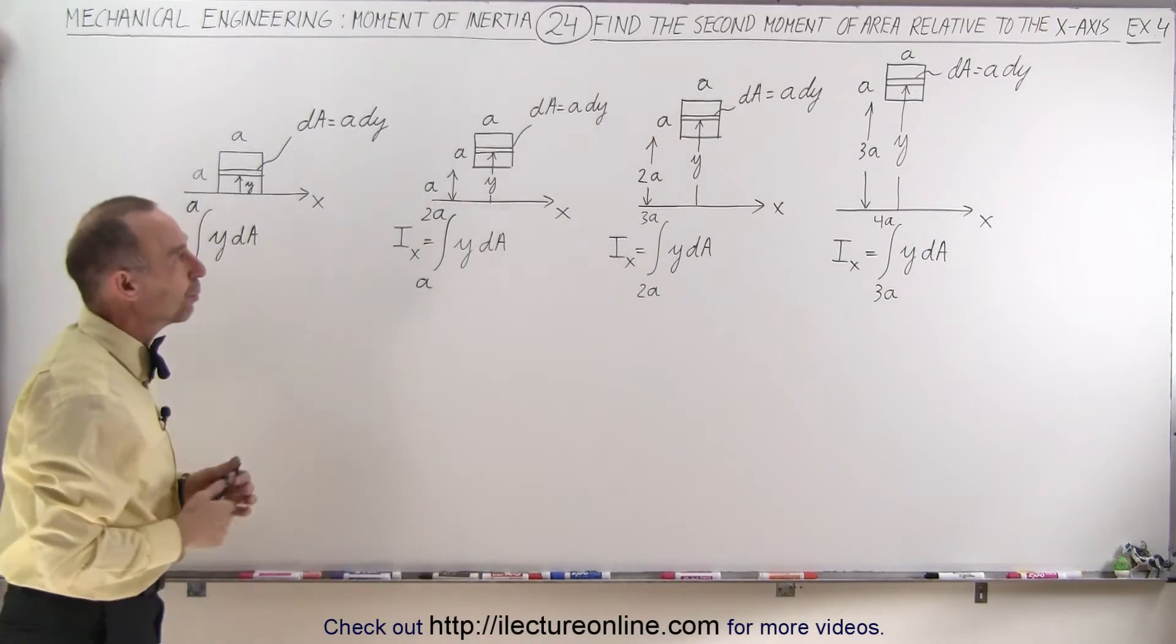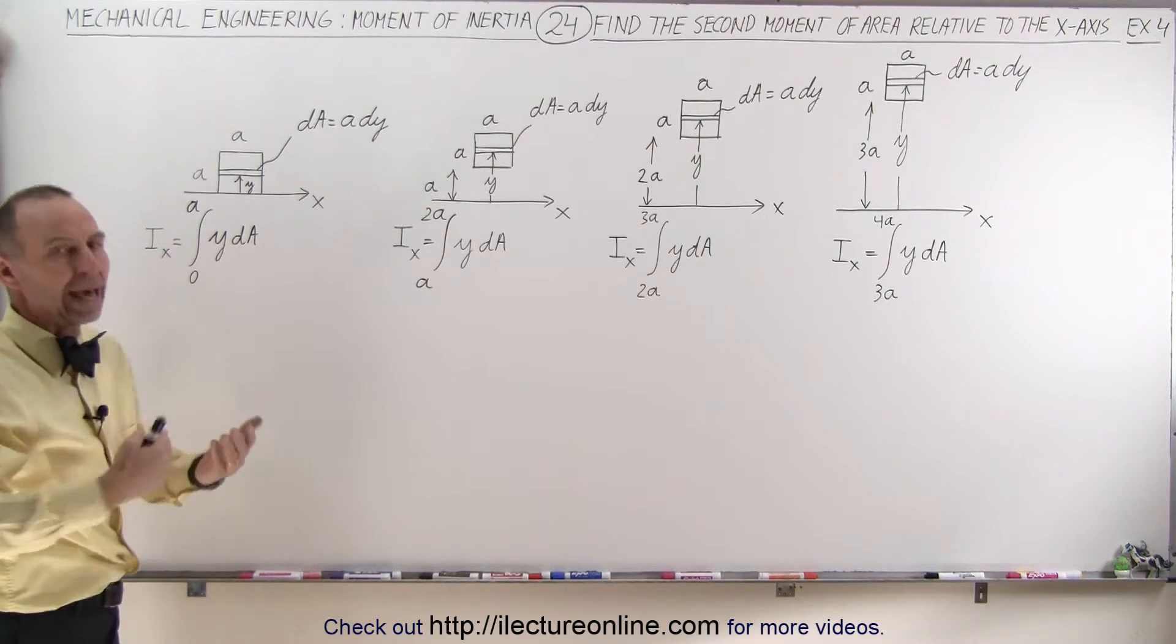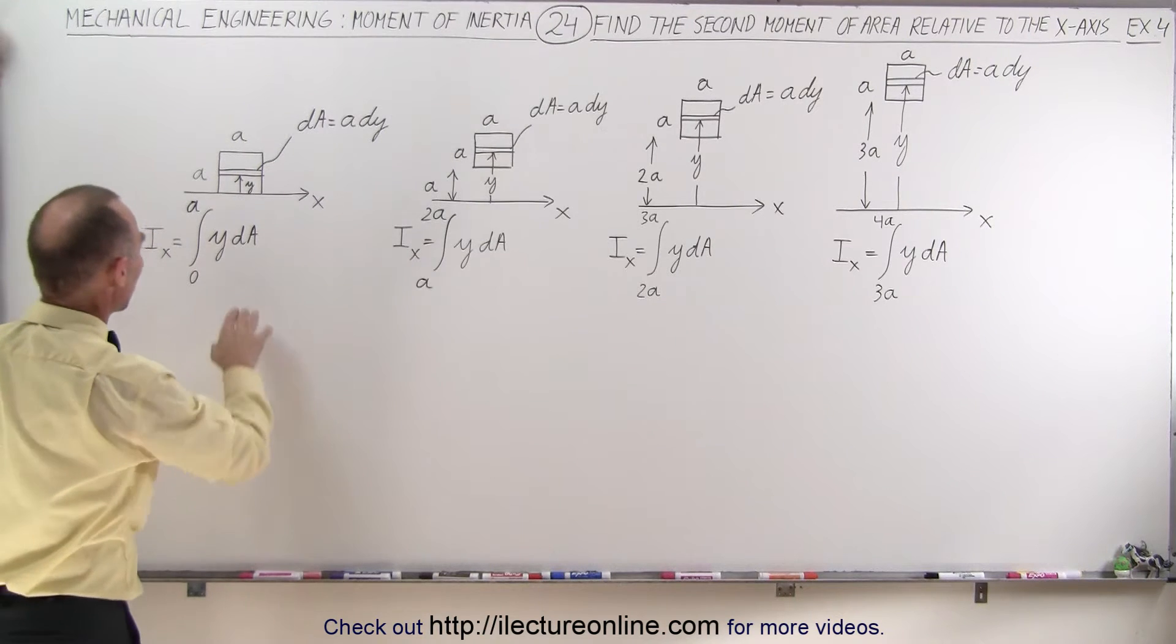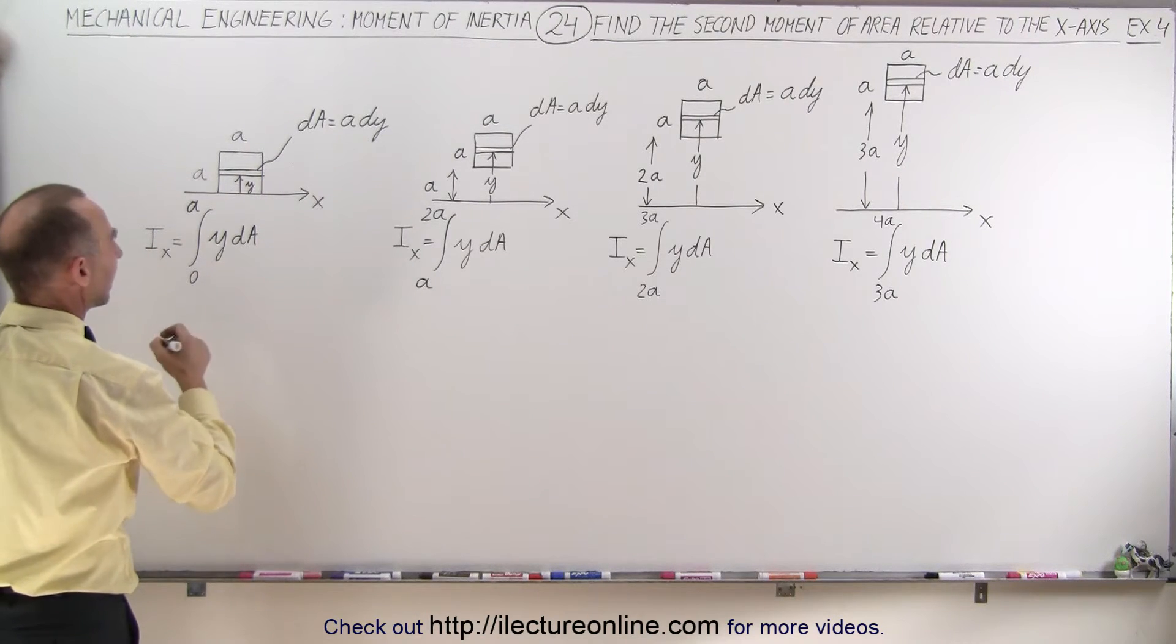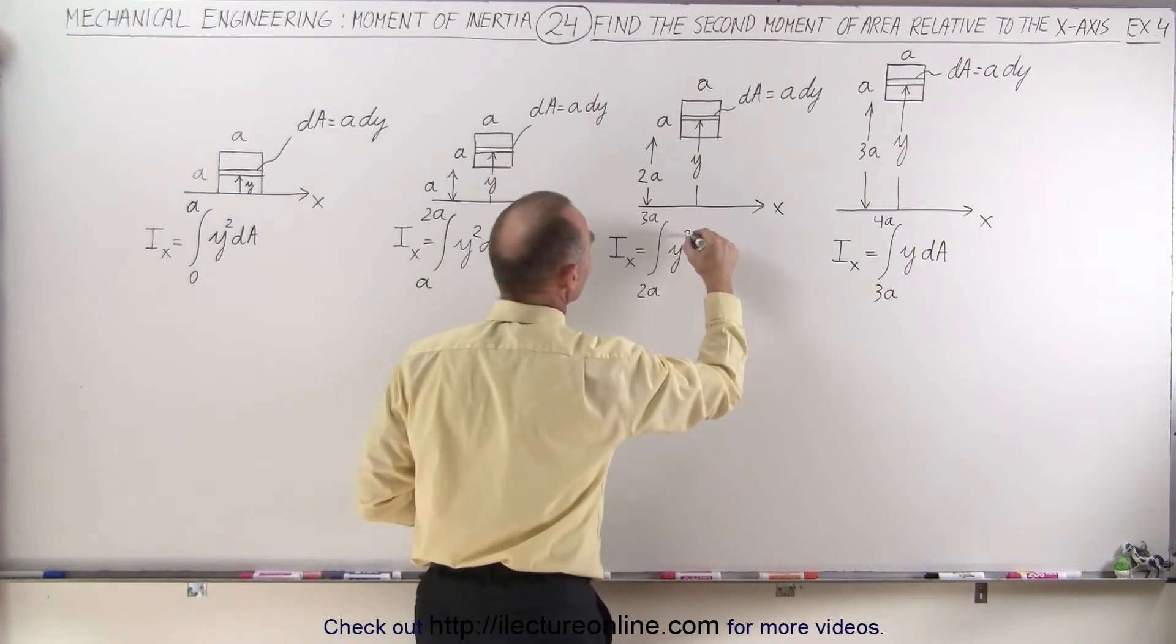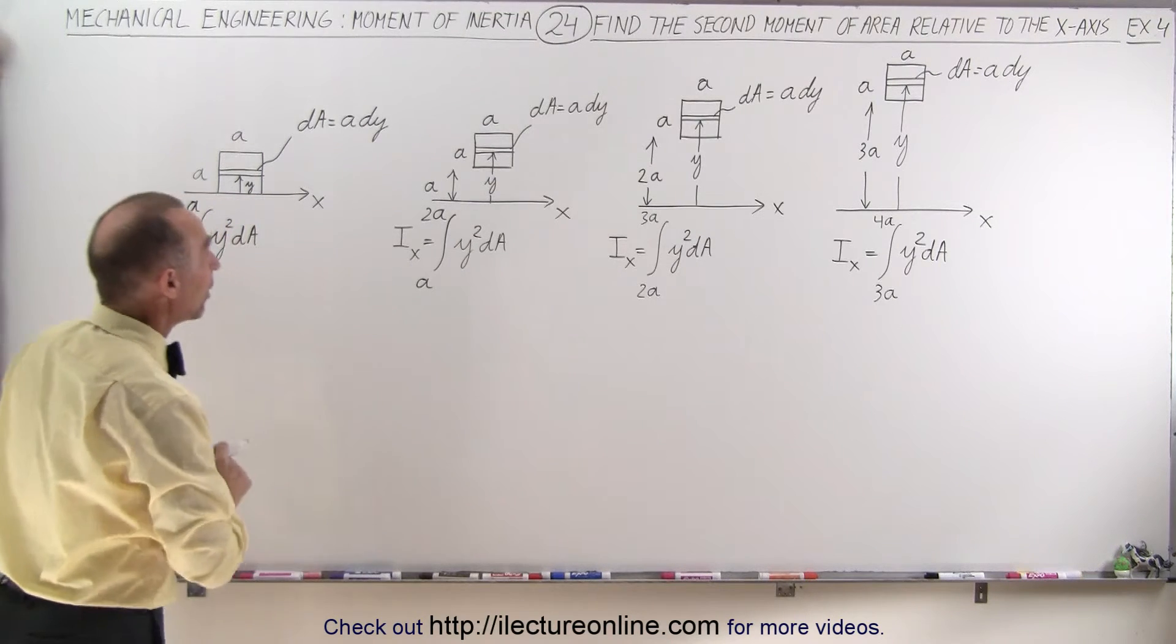In each case, we'll find the second moment of area, and then we'll compare the results to see if there's a pattern there, an interesting result. First of all, we'll do this one here. Of course I should write y squared in each one of those, otherwise I'm not finding the second moment of area, I would be finding the first moment of area, which is not what I want.